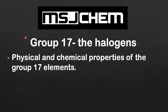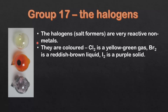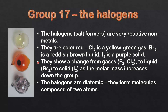This is MSJChem and in this video I'm going to look at the physical and chemical properties of the group 17 elements, the halogens. The halogens, which means salt formers, are very reactive non-metals. They are colored — chlorine is a yellow-green gas which you can see at the top, bromine is a reddish-brown liquid which you can see in the middle, and iodine is a purple solid which you can see at the bottom. They show a change from gases to liquid to solid as the molar mass increases down the group.